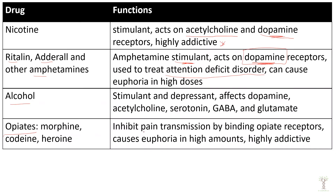Opiates are neurotransmitters that inhibit pain — they are inhibitory. Examples include codeine, morphine, and heroin. Opiates are extremely addictive, binding to opiate receptors like our endogenous endorphins do.